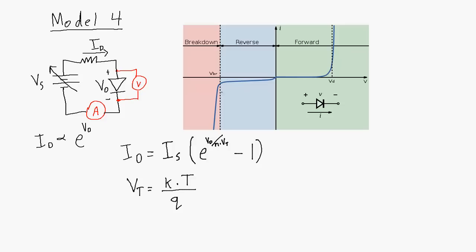To sum up what we looked at in this video: we looked at four different models of the relationship between voltage and current in a diode in a circuit, going from the very simple to the more complicated. The second model — showing that we can model the diode as having just a constant voltage drop across it if it's forward biased and no current through it if it's reverse biased — is the model that we're going to be using most of the time, because it's quite simple to use and at the same time it's pretty precise in describing the behavior of a diode. I hope you learned a little bit in this video and I will see you in the next one.